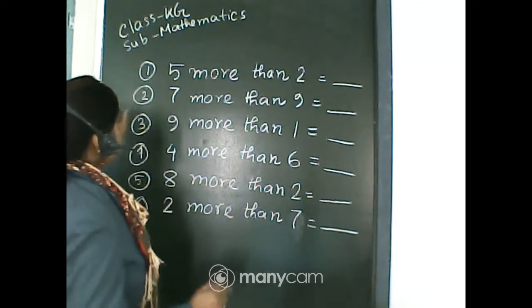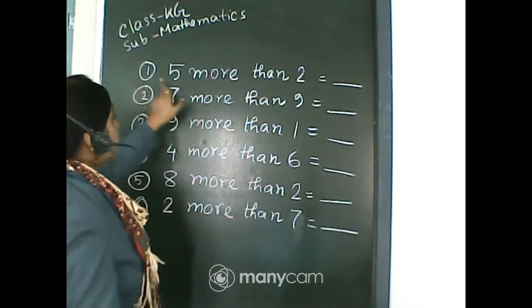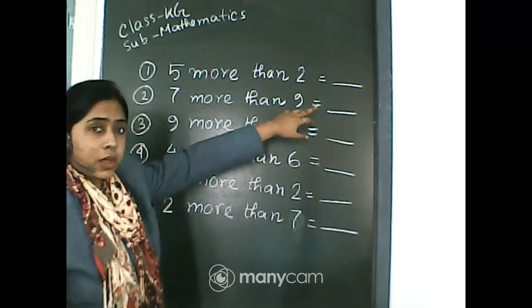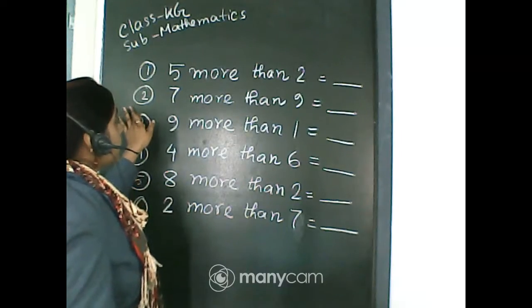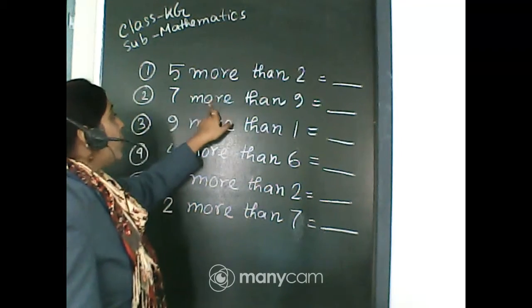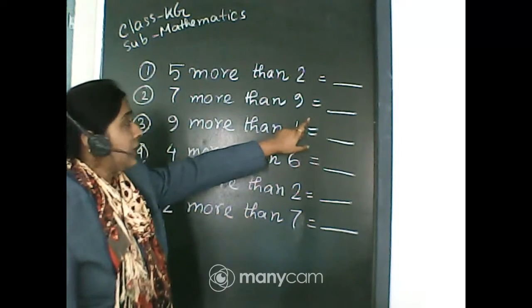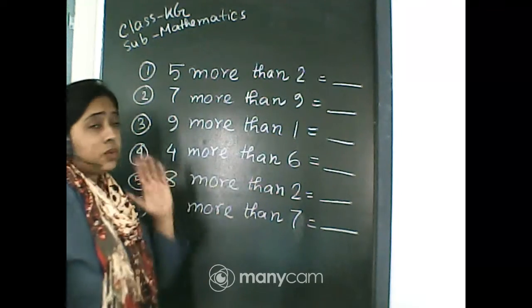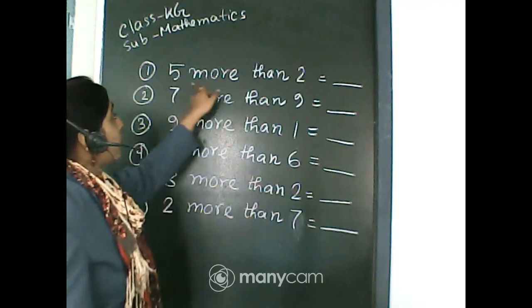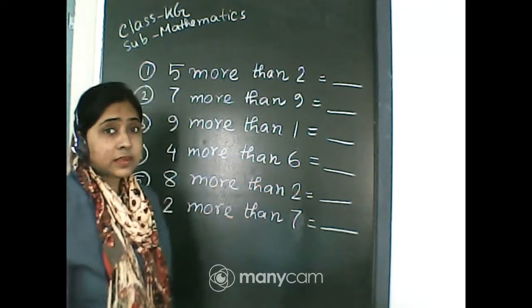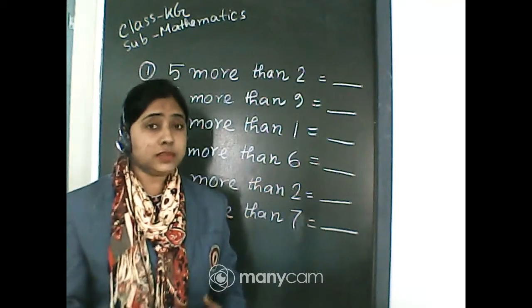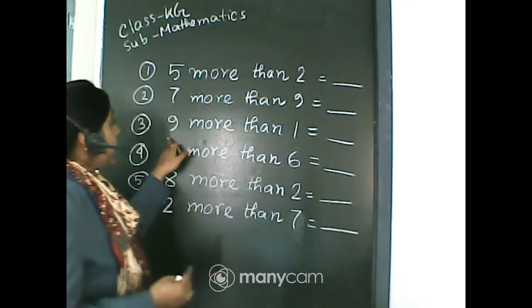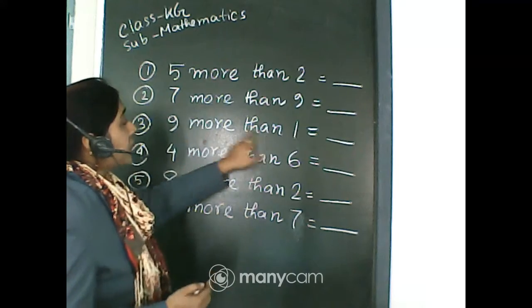Number one: five more than two equals dash. Number two: seven more than nine equals dash. All of you know the term 'more than' means adding together.